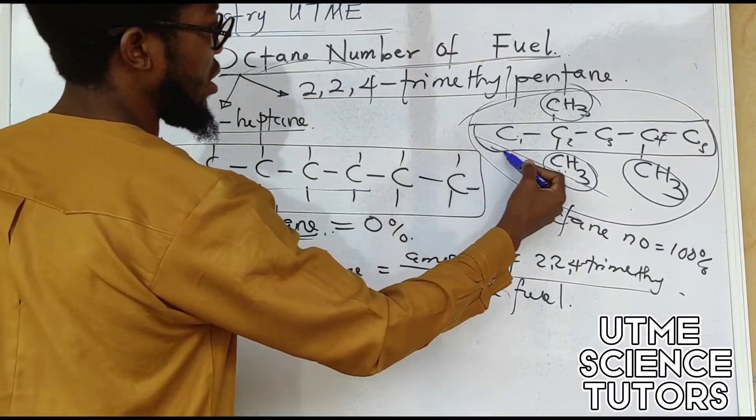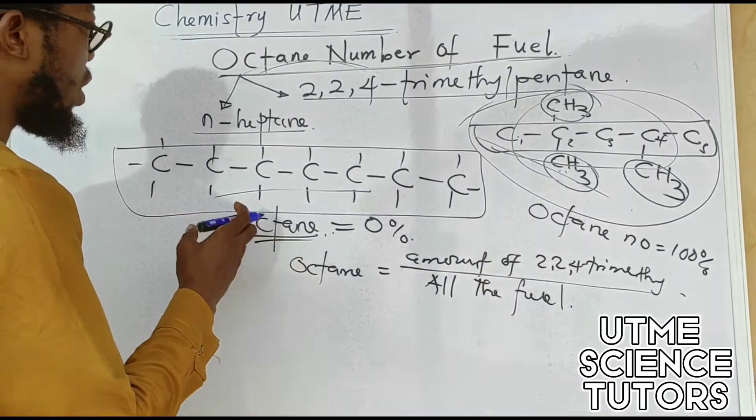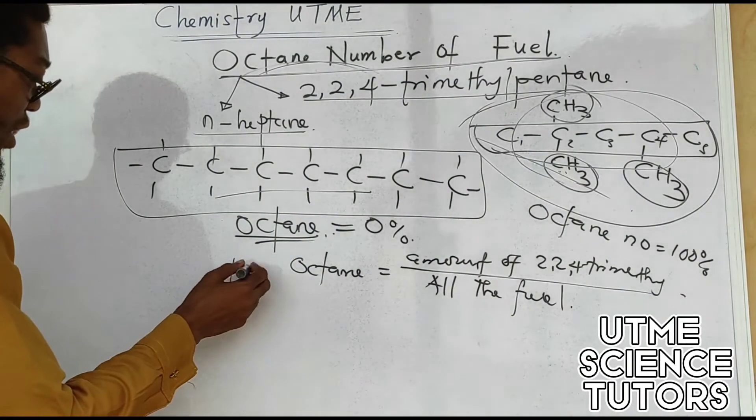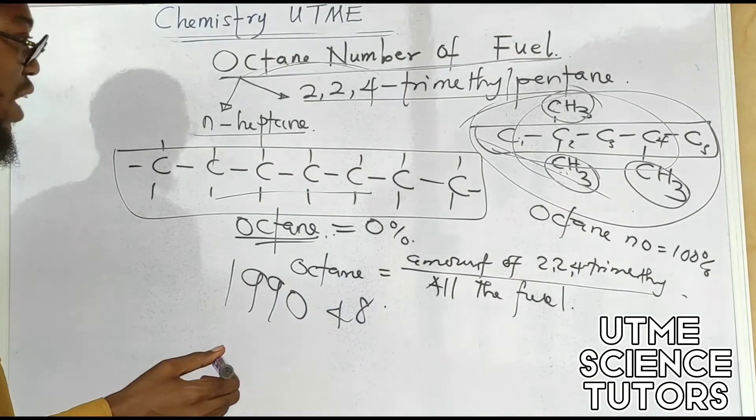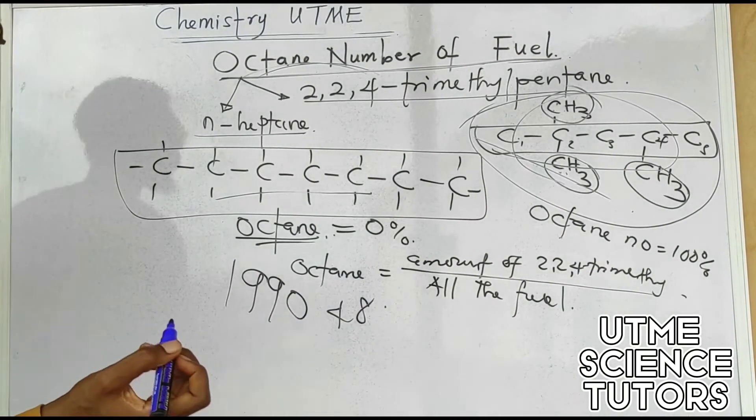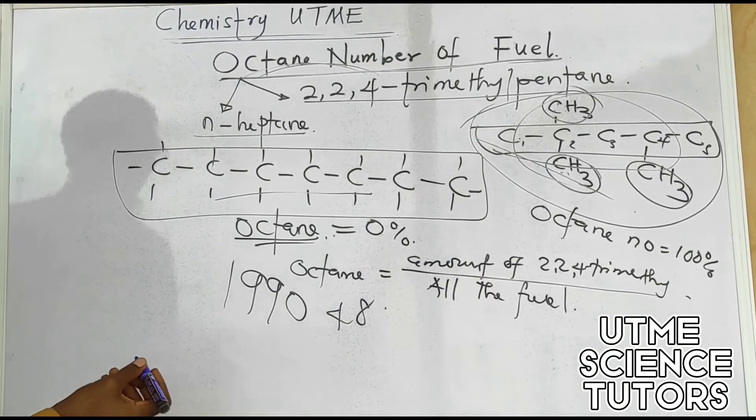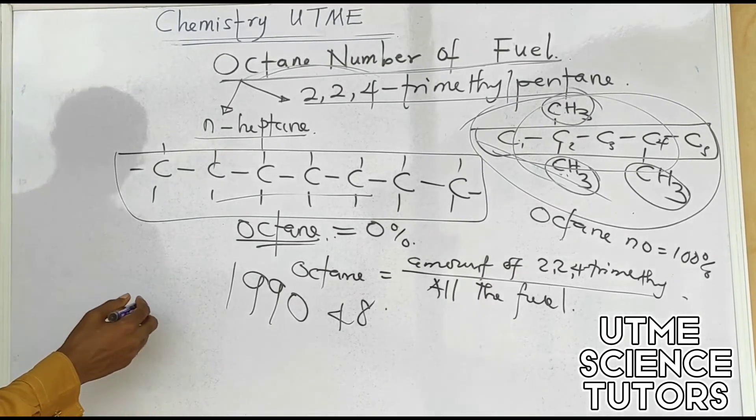So in the UTME question that comes in, that we have in 1990 question 48, the question says: the octane number of a fuel whose performance is the same as that of a mixture of 55 grams of 2,2,4-trimethylpentane and 45 grams of n-heptane is what?